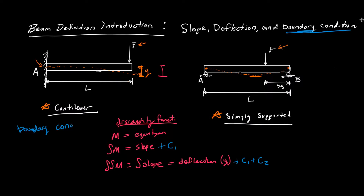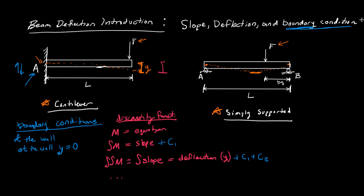Boundary conditions depend on the geometry of the beam. For a cantilever beam, at our support A — at the wall — the beam is fixed and not going to be moving up or down at all, so we can say Y equals zero at the wall. Additionally, the slope at the wall is going to be zero, because the beam is firmly held there and only starts to deflect further out.